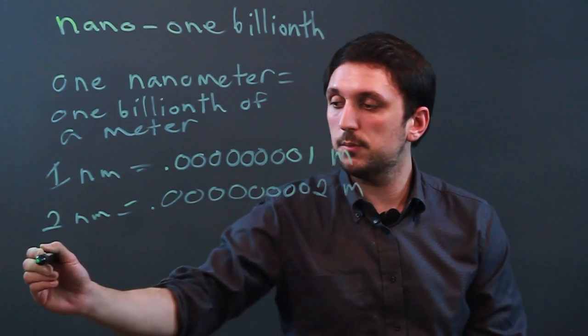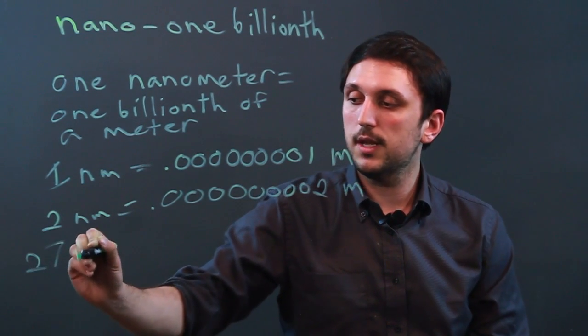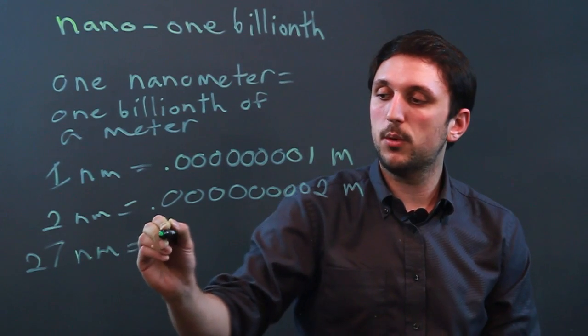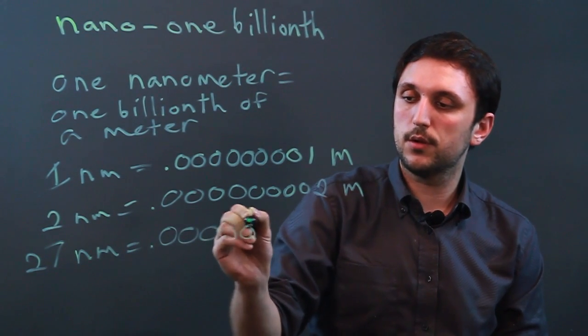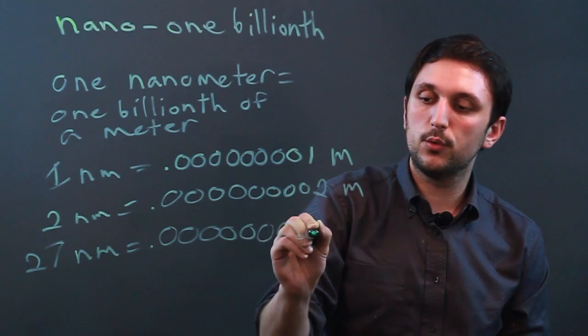And if you're confused and you have to put, say, 27 nanometers, it would be .0000000027.